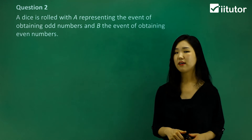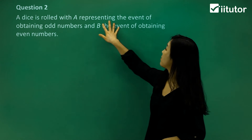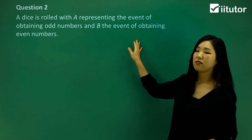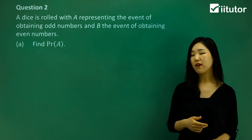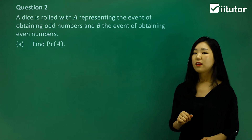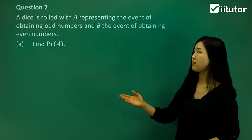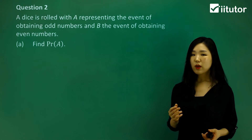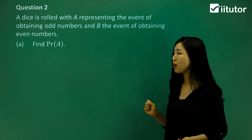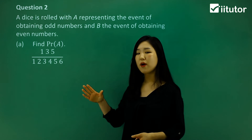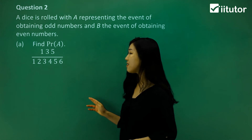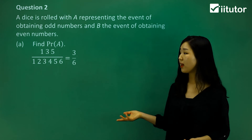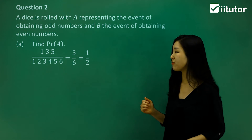Now let's try some actual questions involving numbers. Question two: a dice is rolled with A representing the event of obtaining an odd number, and B is the event of obtaining even numbers. First, find the probability of event A — the event of obtaining an odd number. In a regular die, the odd numbers are one, three, and five. That's three odd numbers out of six total, so the probability is three over six, which simplifies to one half.